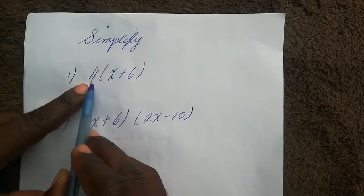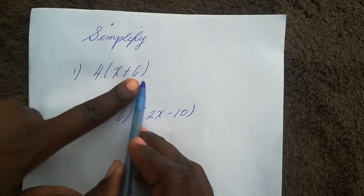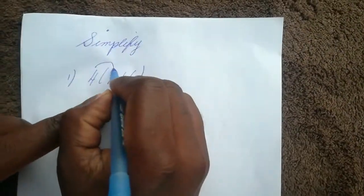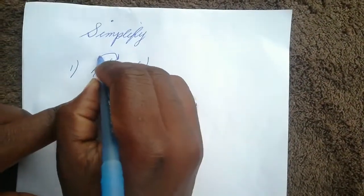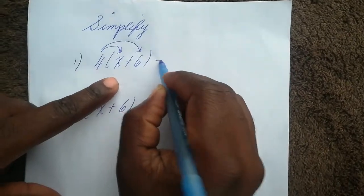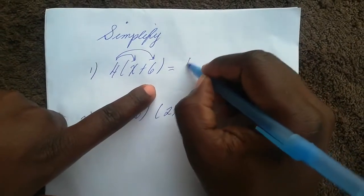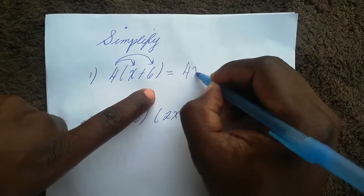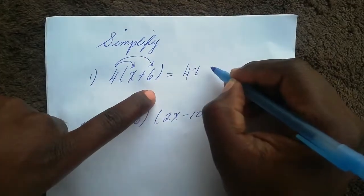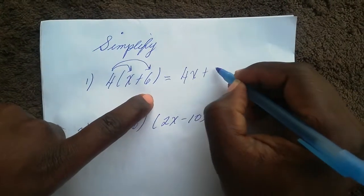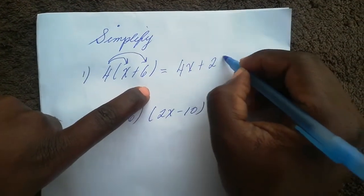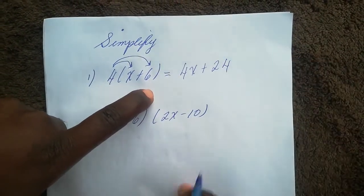For the first example, let's start off simple. We have 4 outside and (x + 6) in the bracket. So I'm going to multiply the 4 by the x and the 4 by the 6. Four times x gives me 4x, and four times six gives me 24.